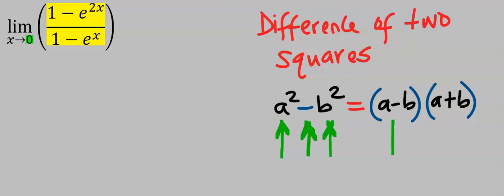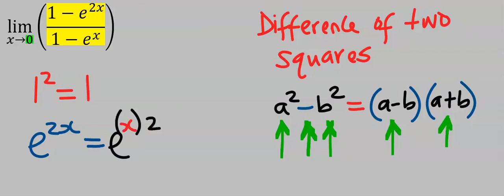...is equal to (a minus b) times (a plus b). Subsequently, 1 squared is the same thing as 1. Also, exponential to the power of 2x squared is the same thing as (e^x)^2, or exponential to the power of x all squared.